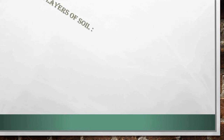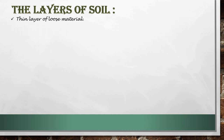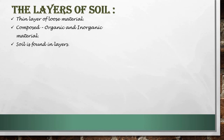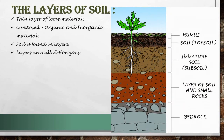Now let us understand the different layers of soil. Soil is a thin layer of loose material covering the earth's surface. It is composed of both organic and inorganic materials. Soil is found in layers which are arranged during the formation of soil. These layers are called horizons, and the sequence of layers is the soil profile. The layers of soil can be easily observed by their color and size of particles.